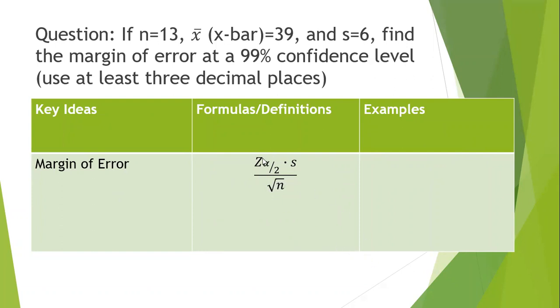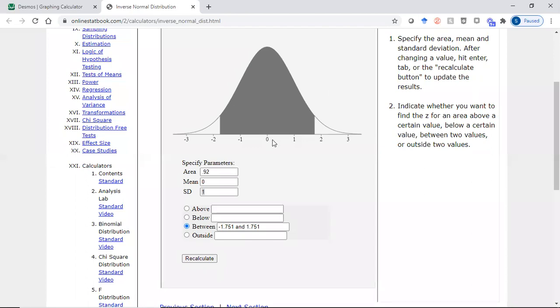So first we need to find our z alpha over two for a 99% confidence interval. We'll go back to this inverse normal distribution app. We'll type in 0.99, make sure that we're clicking between, and when you recalculate, we get 2.576 for our z alpha over two.